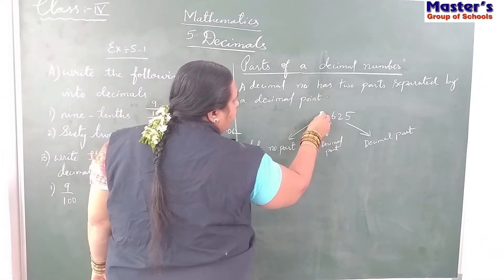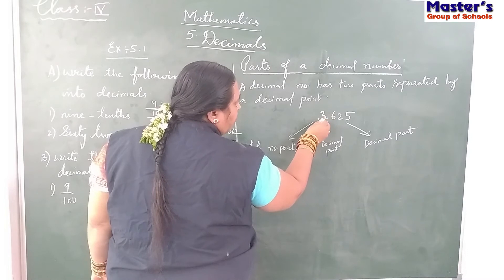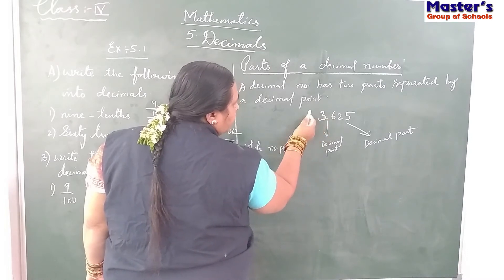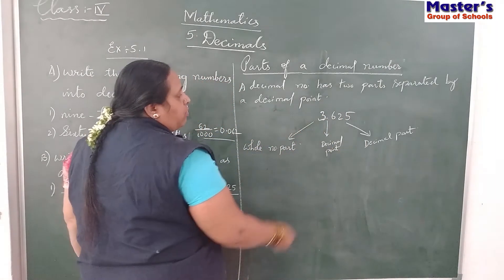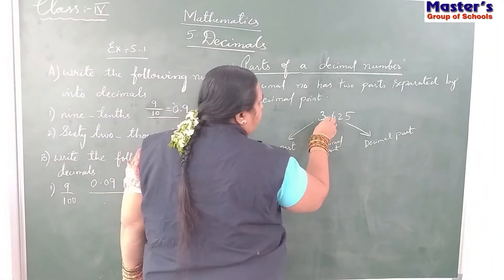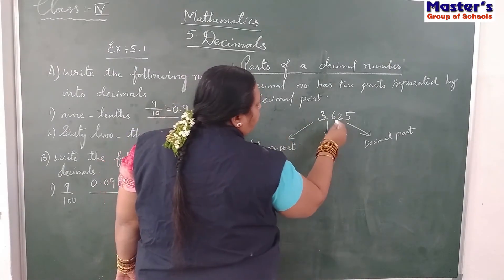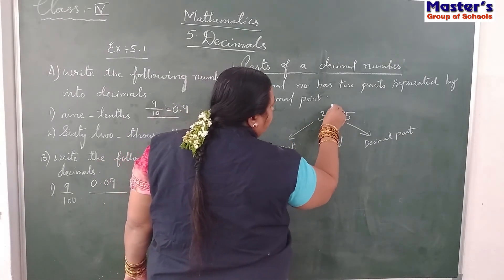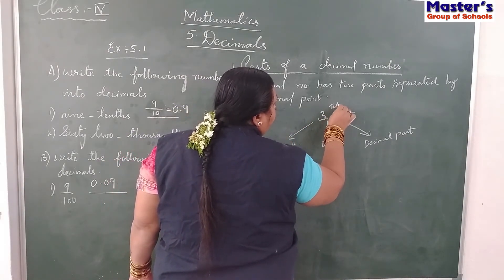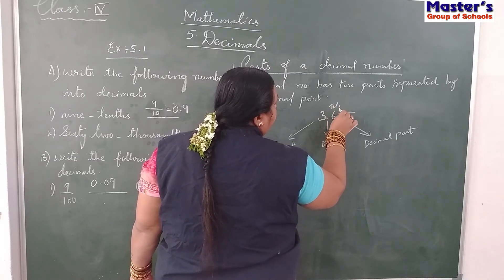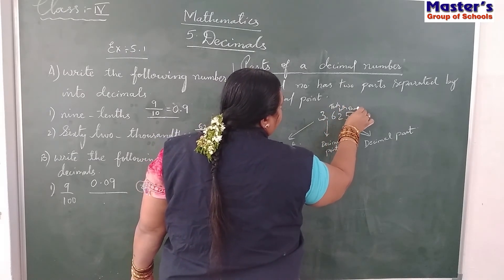Now you have to read this one as follows. After the point is ones, then 100,000th. Similarly, before the point it is ones, then 100,000th. After the point it is 10th, 100th - this is 100th - and this is 1000th.